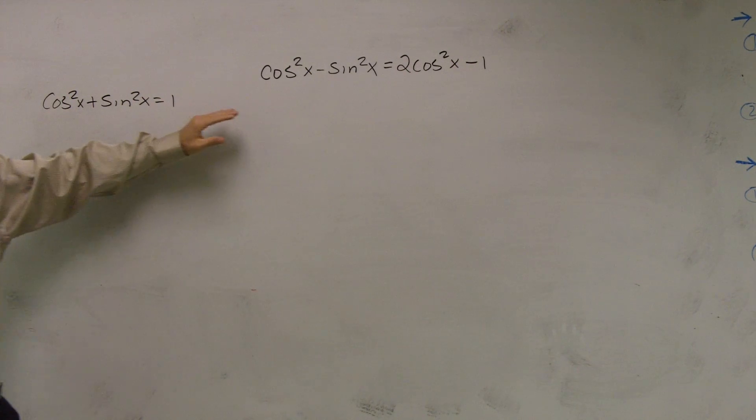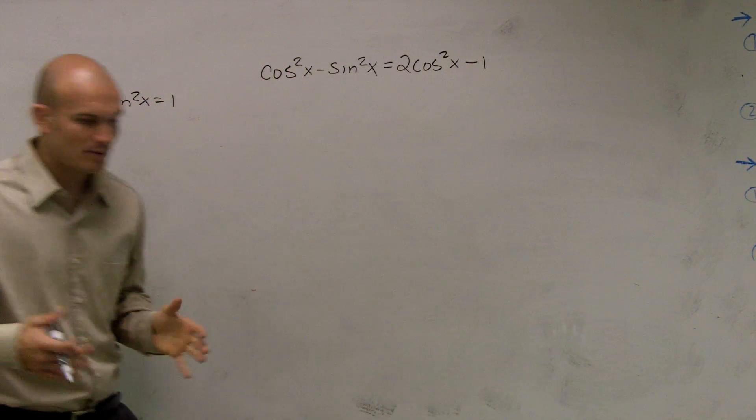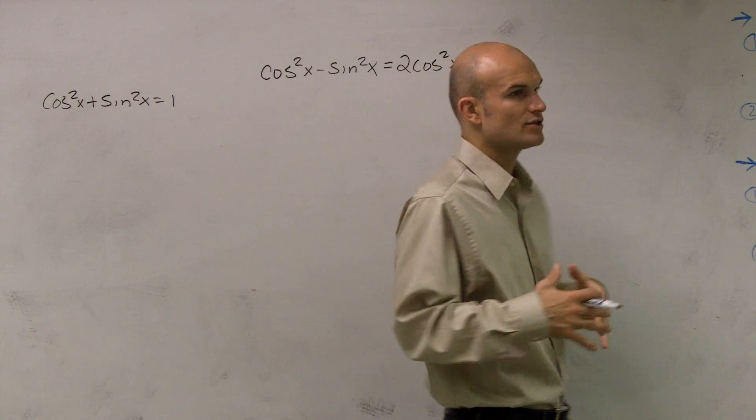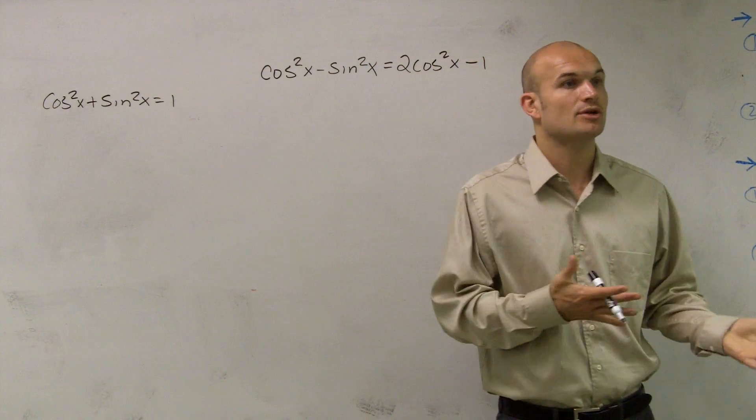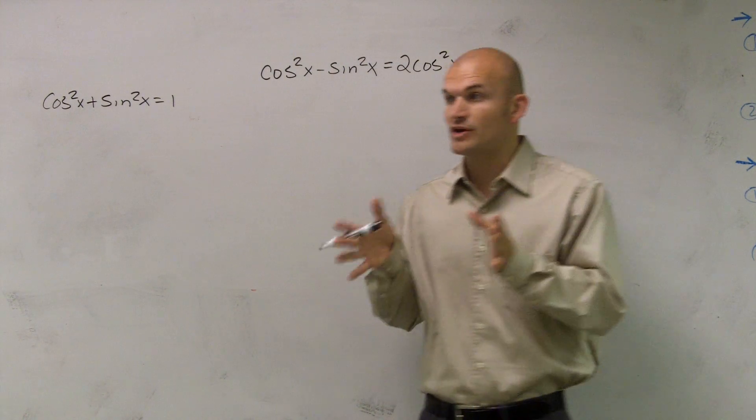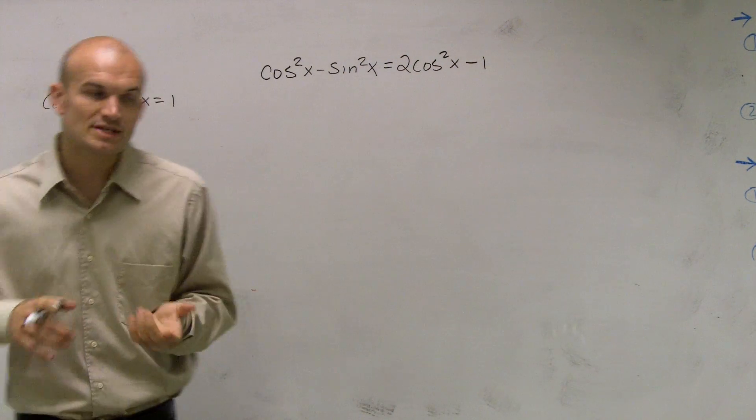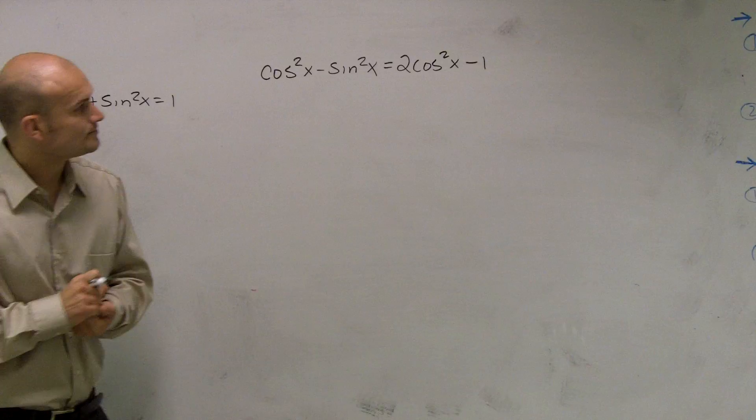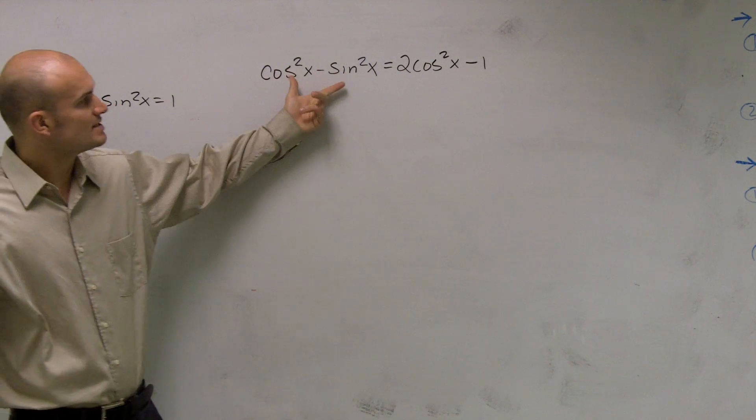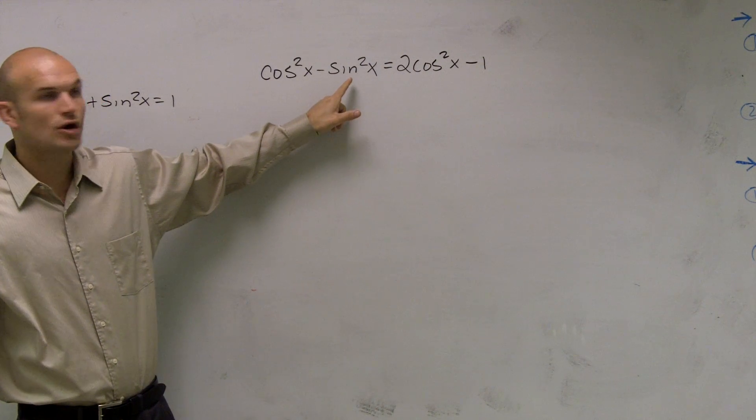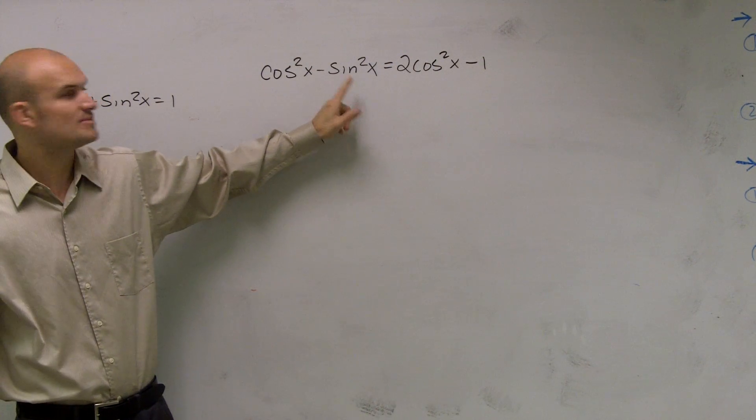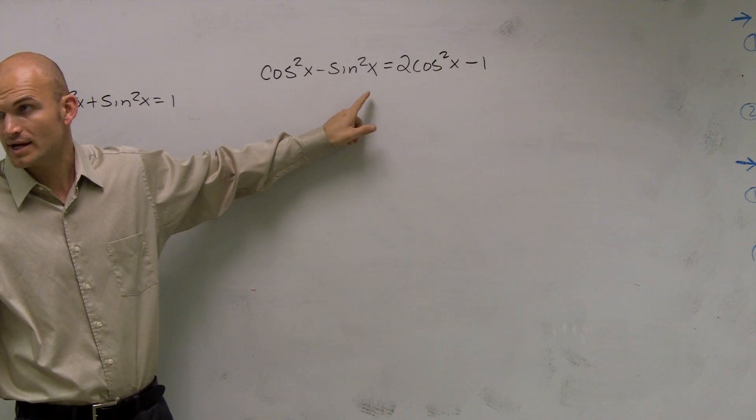But what we can do is, if I'm looking at this, remember one thing I told you guys to do is always try to see which is your most complicated side. Just pick a side and then try to make it look like the other side so you can verify that your equation is actually equal. Well, if I take a look at this side and say if I want to make it look like this, that means I need to convert this sine to a cosine, right?